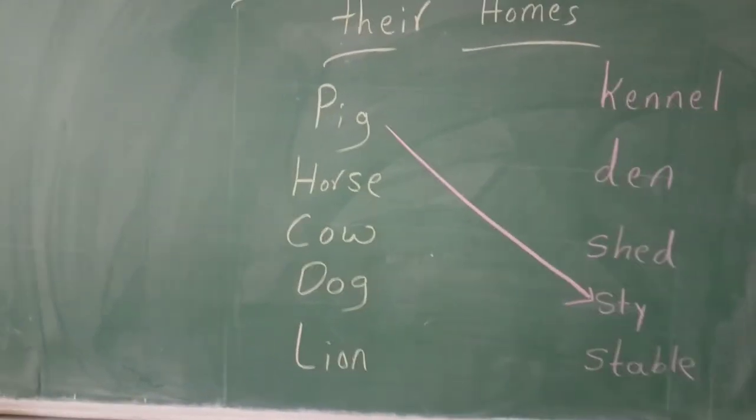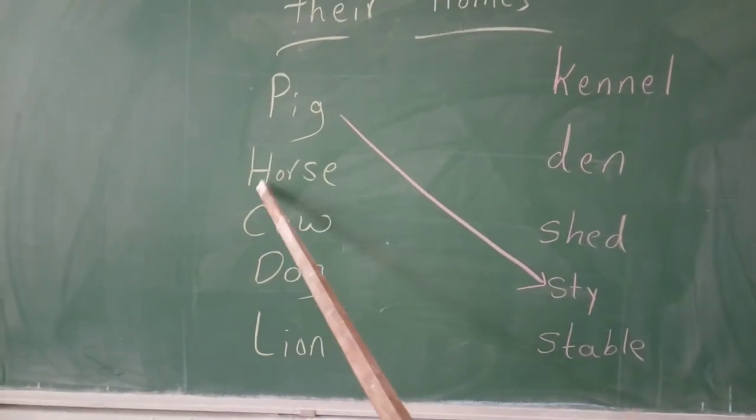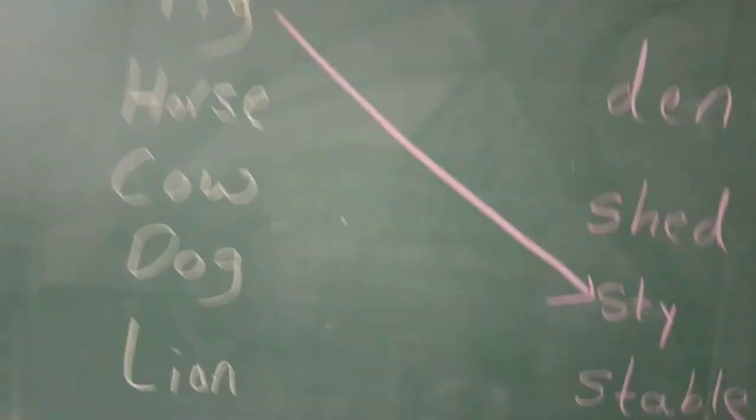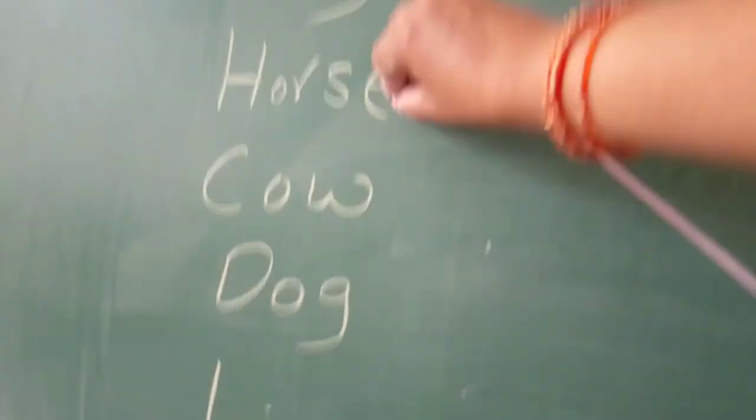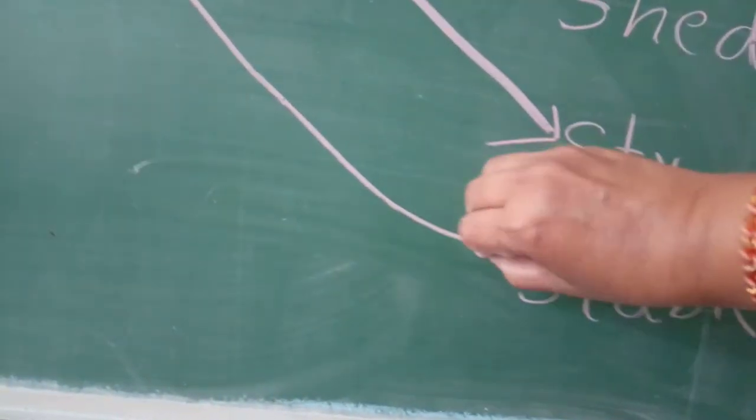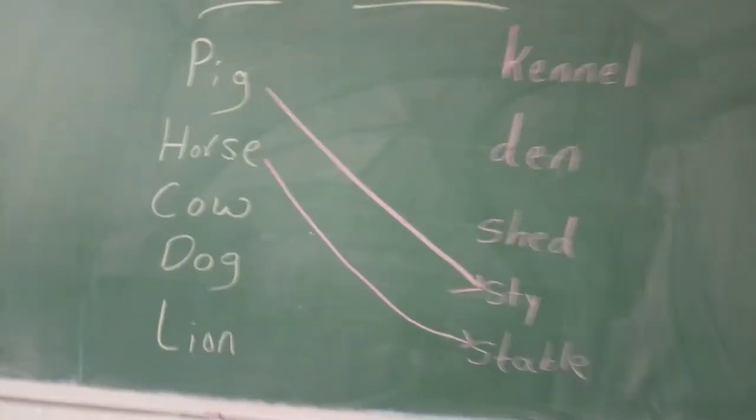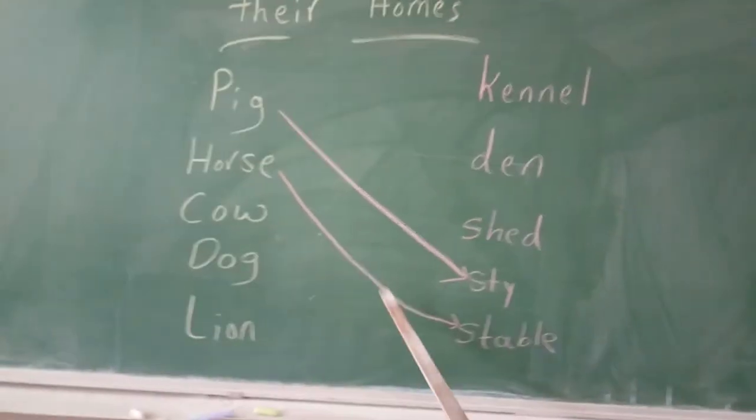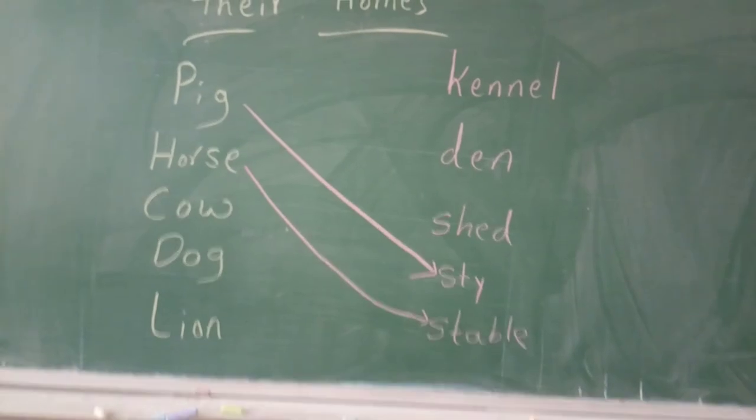Then Horse. What is second one? Tell me children. Horse, H-O-R-S-E, Horse. Horse is staying in stable. All of you see here. H-O-R-S-E, Horse. Yes, S-T-A-B-L-E, Stable.